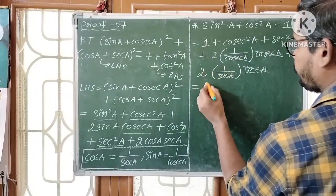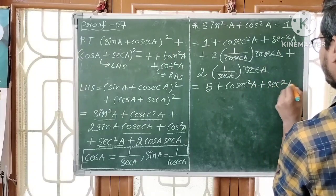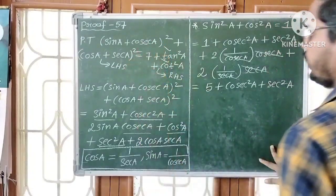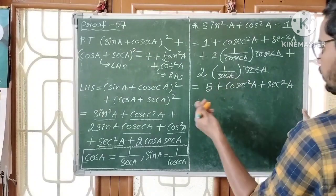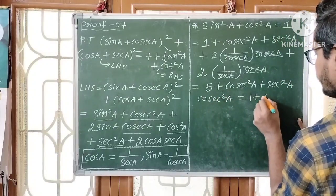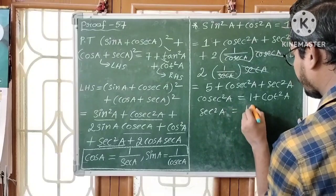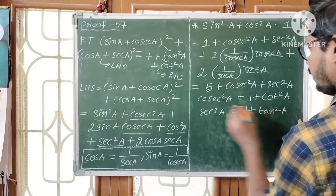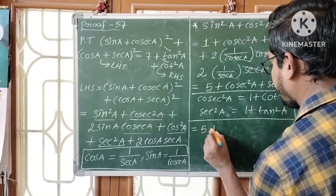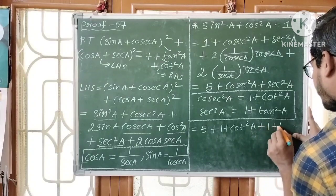So we have 1 + 2 + 2 = 5, plus cosec²a + sec²a. Now observe the RHS has tan and cot, not cosec and sec. We apply two more identities: cosec²a = 1 + cot²a, and sec²a = 1 + tan²a. So in place of cosec²a we write 1 + cot²a, and in place of sec²a we write 1 + tan²a.